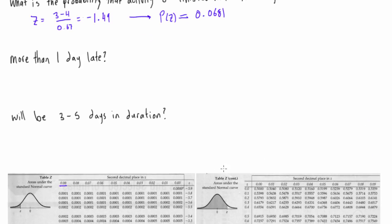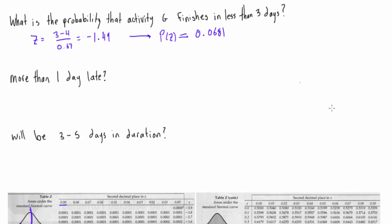What does that mean? The z-score table always gives you the probability of landing in the shaded area. Our mean was 4 and x was 3, so we label mu and x on the bell curve — it's a normal curve centered at 4 instead of 0. The shaded area represents a 6.81% chance of landing there, which is the area less than 3. That includes 2.5 days, 2 days, 1 day, and so on. So the probability that activity G finishes in less than three days is 6.81%.